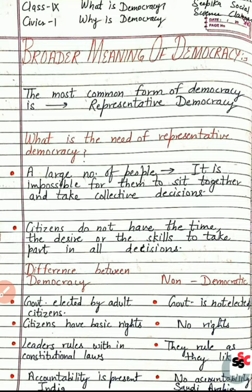Leaders rule within constitutional law — अगर leader भी काम करेगा तो constitution में जो laws हैं वो limits लगाते हैं कि leaders अपनी power से ज़्यादा use नहीं कर पाएंगे। Non-democratic में ऐसा नहीं होता — dictator अपनी मर्जी से rule करता है। Democracy में accountability होती है — government क्या काम कर रही है इसकी जानकारी लोगों के पास होती है, RTI (Right to Information) भी है। Democracy में free and fair elections होते हैं और one person, one vote, one value का principle follow किया जाता है।